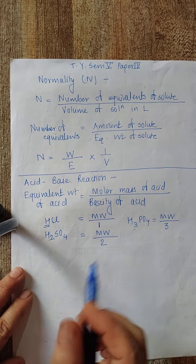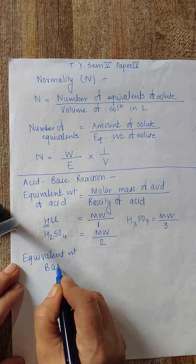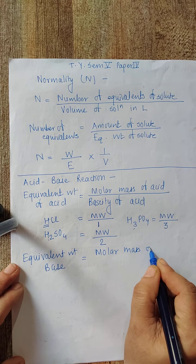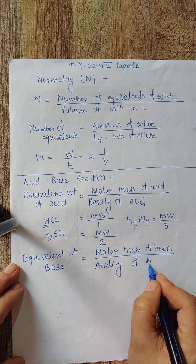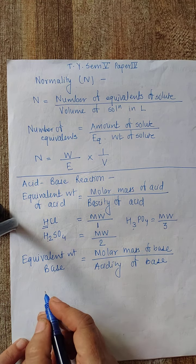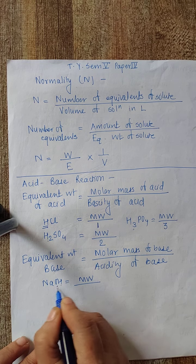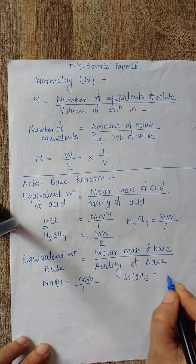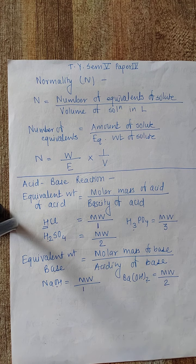The vice versa condition applies for the equivalent weight of a base. Equivalent weight of a base is given as molar mass of base divided by acidity of the base. For example, for NaOH: molecular weight of NaOH divided by acidity 1. For barium hydroxide, Ba(OH)₂: molecular weight divided by 2, because the acidity of this base is 2.